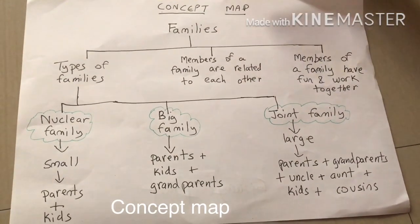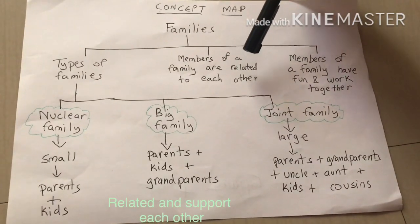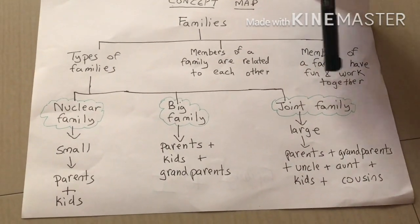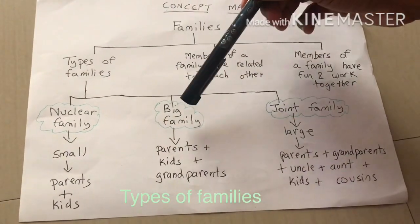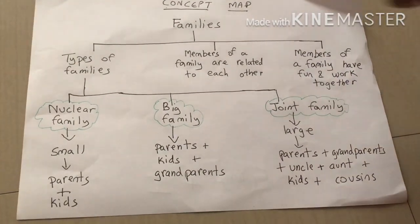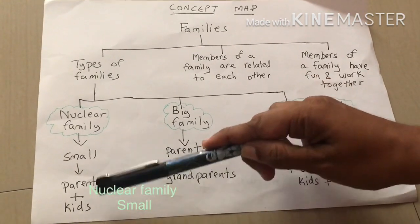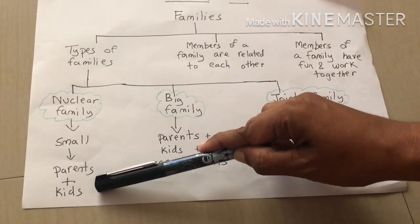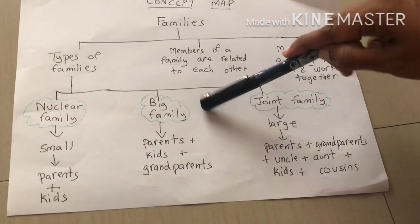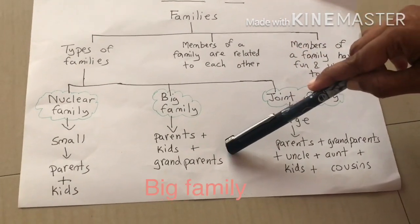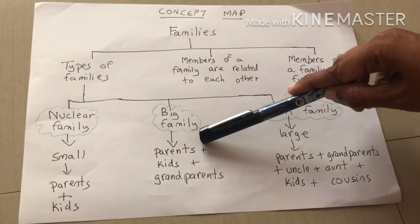Let us look at the concept map. Families — members of a family are related to each other, and the members of a family have fun and work together. Types of families: nuclear family, big family, joint family. Nuclear family is a small family in which parents and their kids live together in the same house — father, mother, child or children. Big family: parents plus kids plus grandparents — father, mother, grandfather, grandmother, child or children.